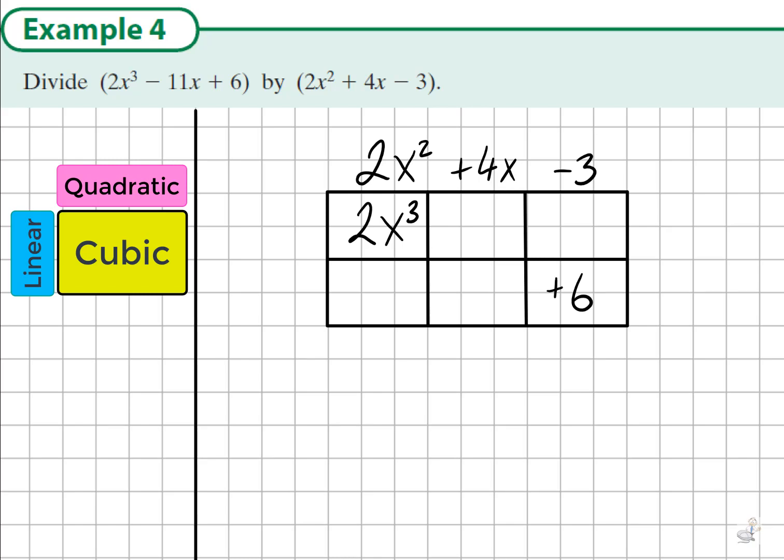We can't place the other terms yet, but we can divide to find the linear factors. What would we multiply 2x squared by to get 2x cubed? The answer is x. What would we multiply negative 3 by to get positive 6? It is negative 2.